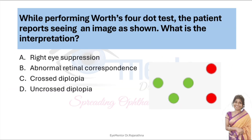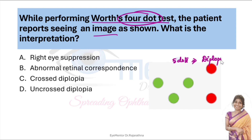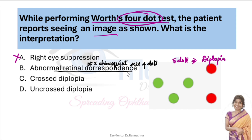While performing the Worth 4 dot test, the patient reports seeing an image as shown. He is seeing 5 dots — we showed him only 4. The moment he sees 5 dots it means there is diplopia. So there is no right eye suppression. Abnormal retinal correspondence is when a patient with squint sees 4 dots, but this patient is seeing 5 dots, so that is ruled out.